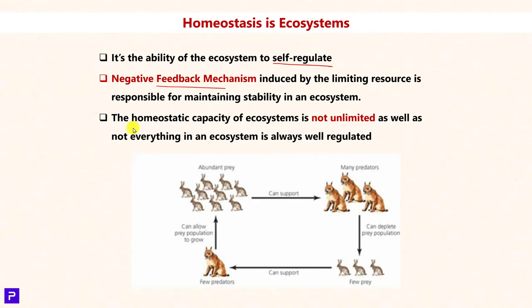However, the homeostatic capacity — the ability of the ecosystem to maintain a state of equilibrium — is not unlimited. If a major biotic or abiotic factor causes a sufficiently large disturbance, the ecosystem may not be able to self-regulate and could collapse as a result.